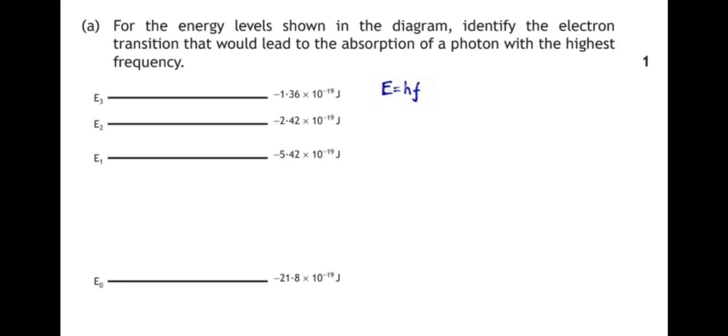So we have this formula E equals HF: energy equals Planck's constant times frequency. And that tells us that the largest energy will give us the highest frequency of photon. So the absorption of the highest photon will be the biggest energy gap on the diagram, which in this case is from E0 up to E3.